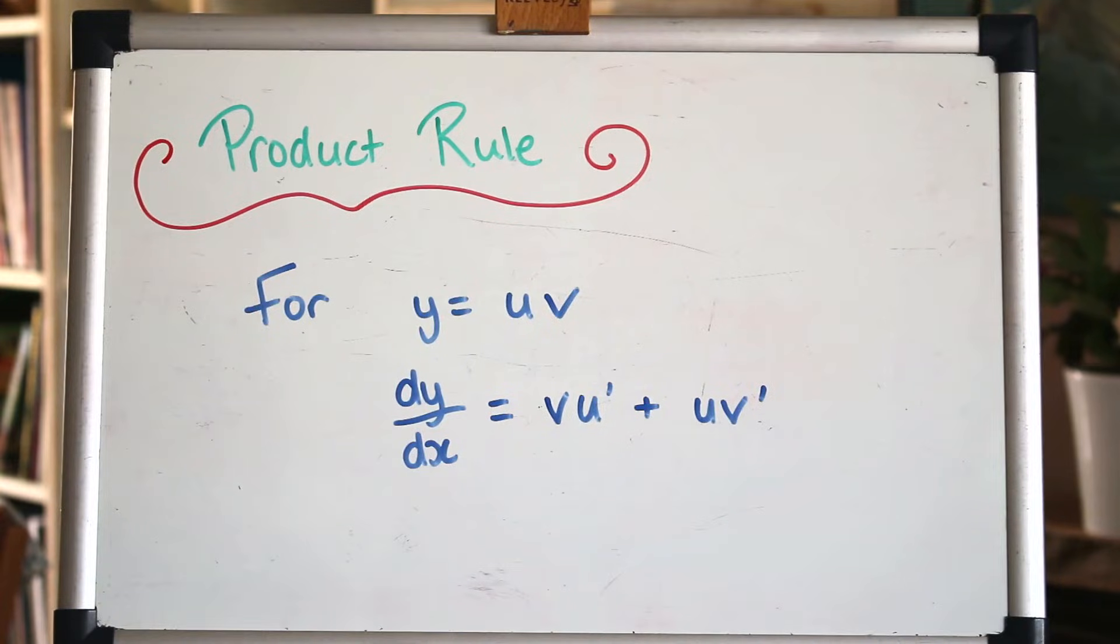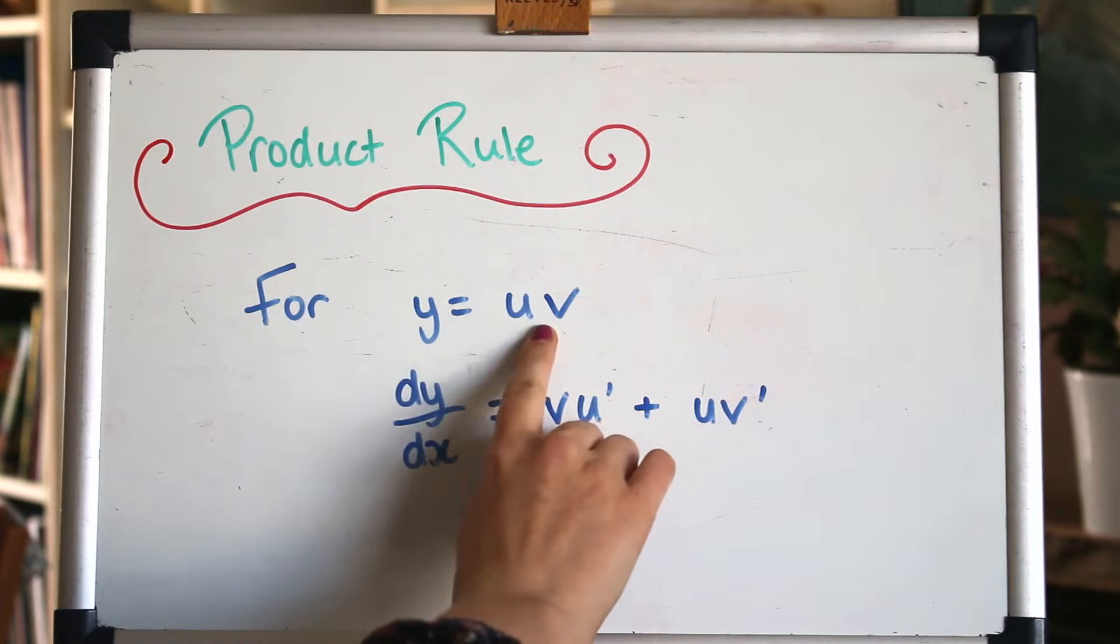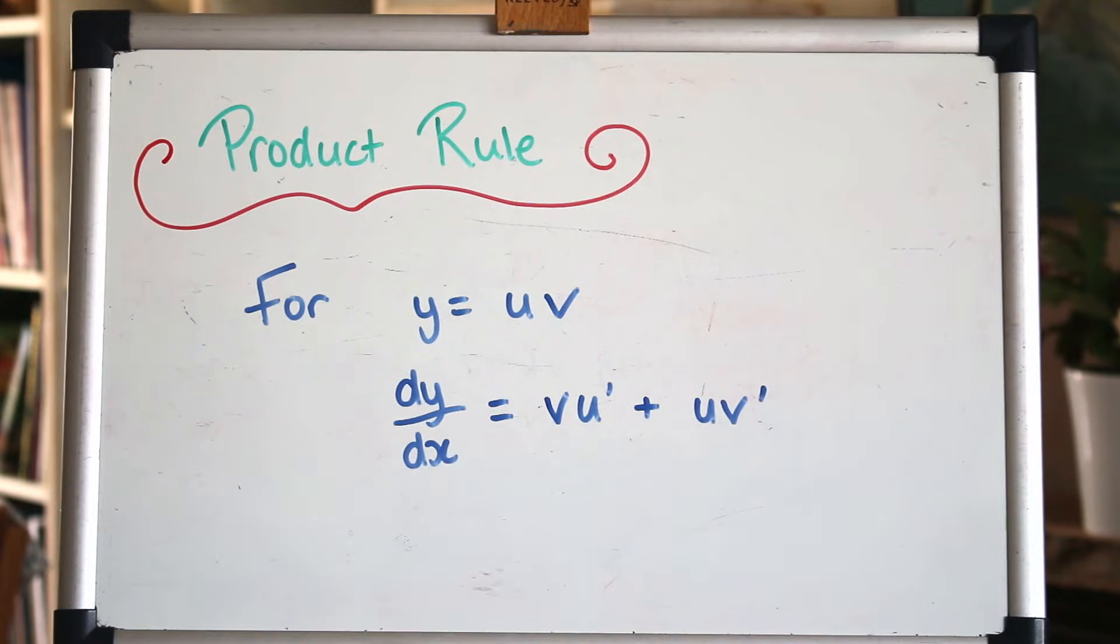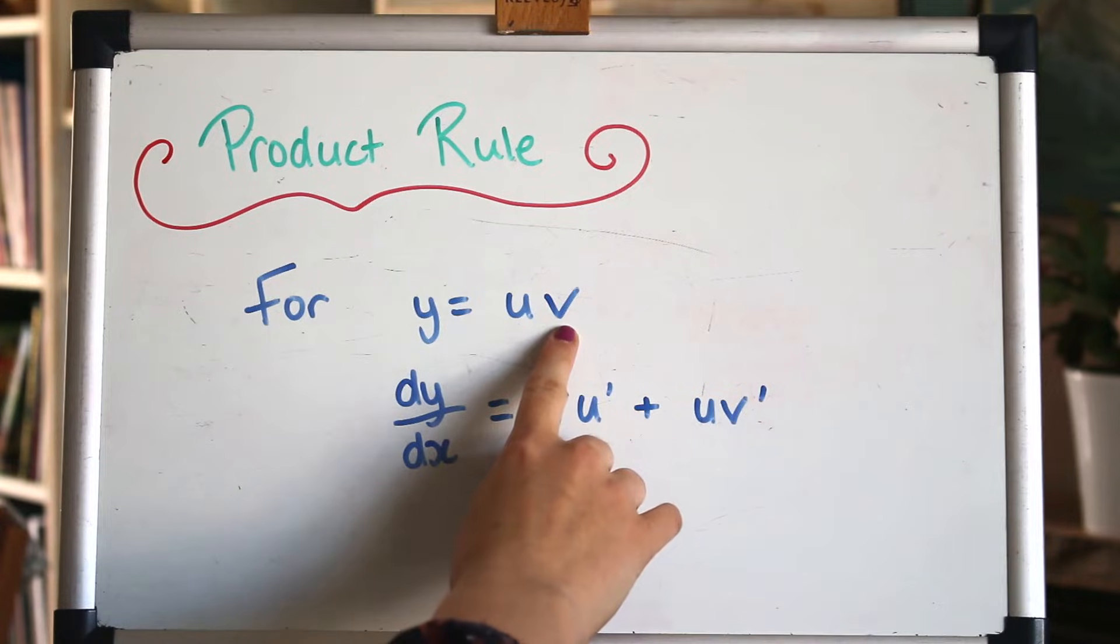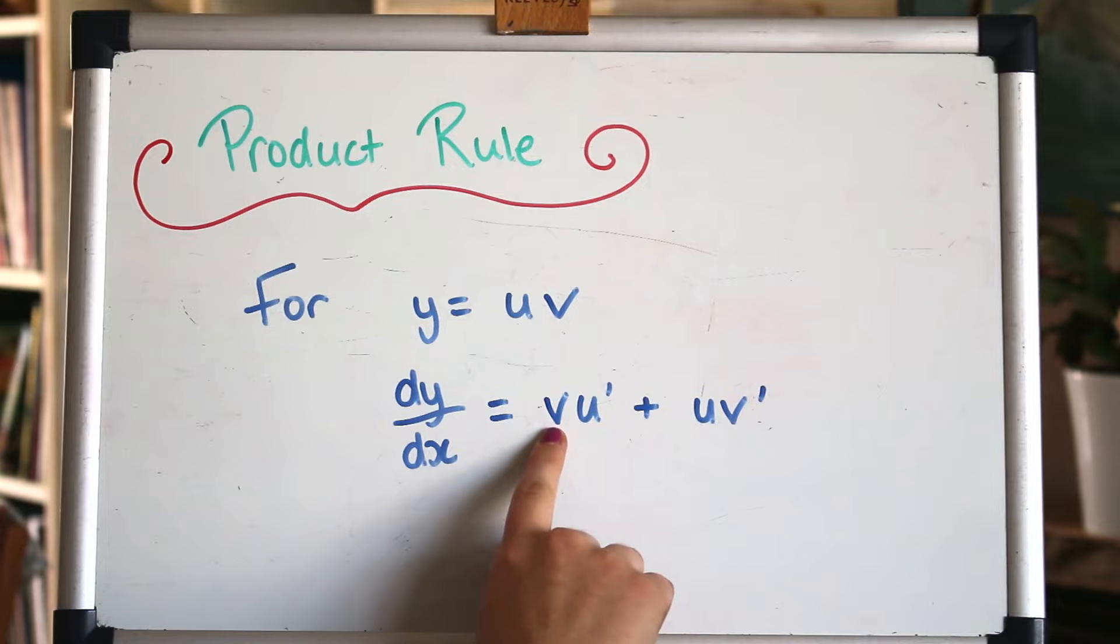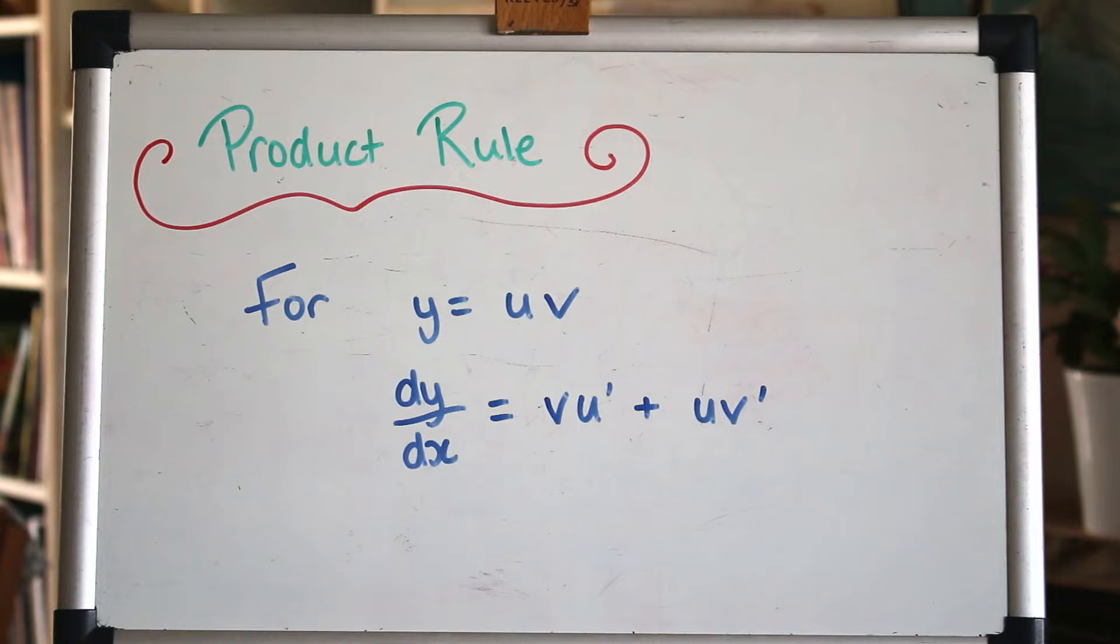Let's start off with the product rule. So I've written here that for a function y, when it's a product of two things times together, which we tend to call u and v, so u times v, whatever they are, the derivative is given by vu' plus uv'. People have different ways of saying this, but the general idea is that when you've got two things that are multiplied together, you take it in turns to differentiate them. So u' means the derivative of u. That's u when it's being differentiated. So we're going to take v and multiply it by the derivative of u and u times the derivative of v and add them together. Let's do an example of that.